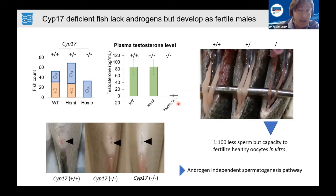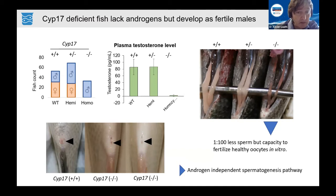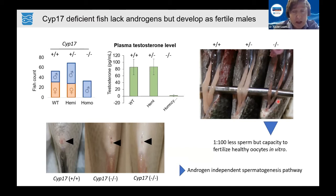These males had no detectable level of testosterone, as confirmed by plasma testosterone ELISA assay. They also had minuscule urogenital papilla, a secondary sex characteristic that depends on testosterone, which grows in proportion to testosterone concentration. These males also had minuscule testes producing a small volume of diluted sperm. However, those sperm were active and perfectly capable of fertilizing oocytes — therefore those males were not sterile. We concluded that there is an androgen-independent spermatogenesis pathway in tilapia, unlike in mammals where absence of androgen results in sterility.